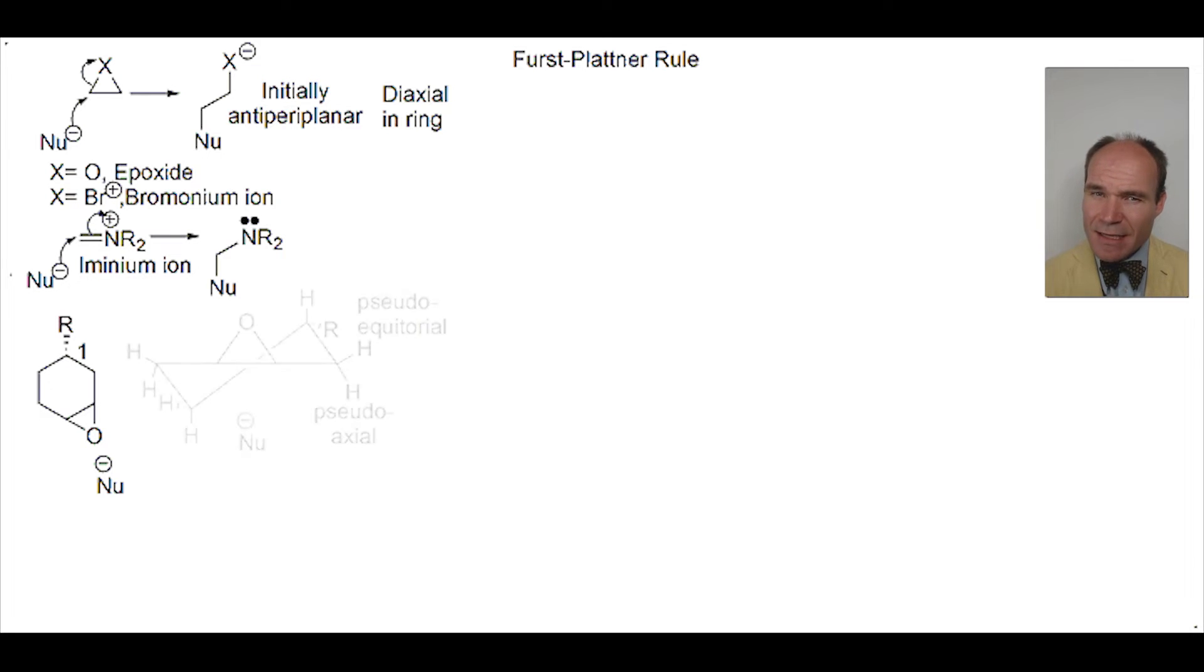Let's think about it in 3D. Immediately, you see it's a half-chair conformation. This is true for epoxide, for bromonium ion, and cyclic iminium ion. The nucleophile can attack either carbons of the epoxide.